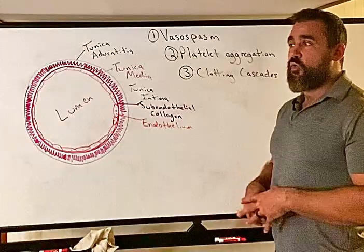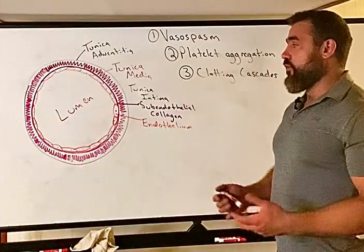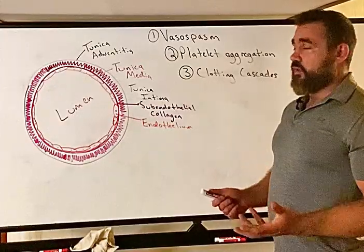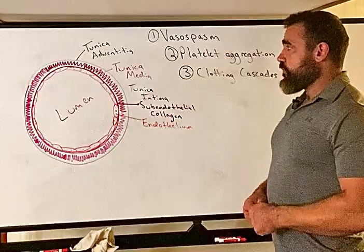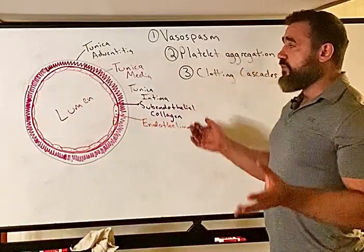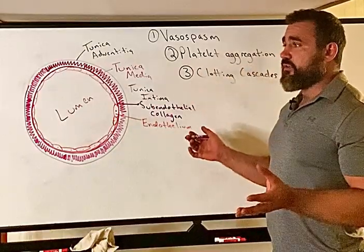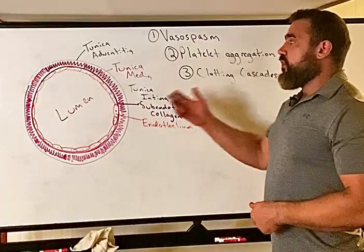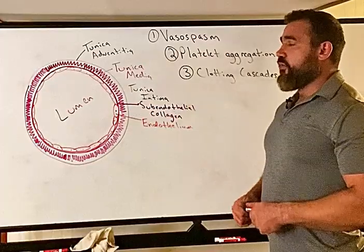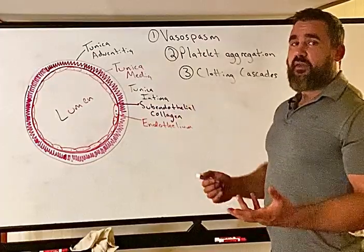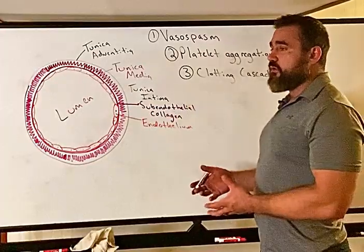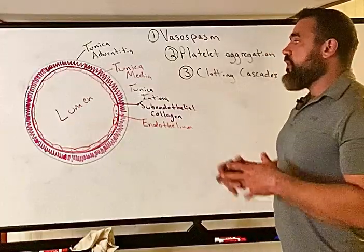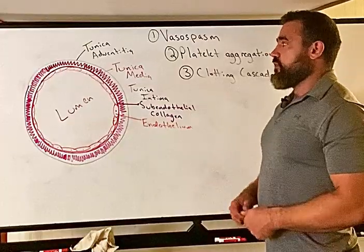When blood is exposed to the subendothelial collagen, there are tissue factors and proteins in there that start the blood clotting process. Some blood vessels, like capillaries, are just a single layer of endothelium, while others have all three layers with varying amounts of smooth muscle or elastic fibers.